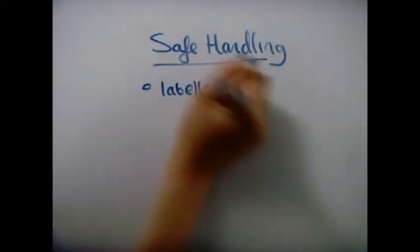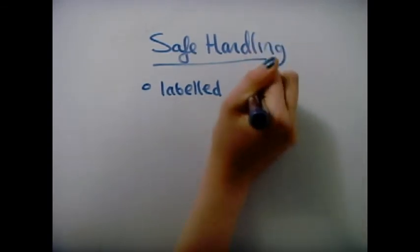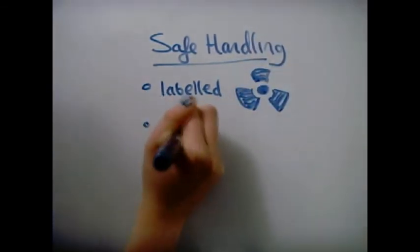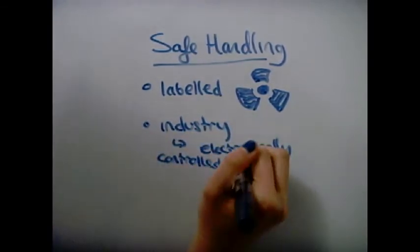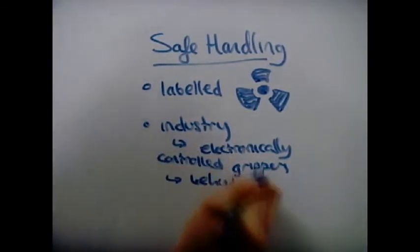Safe handling. All radioactive materials are labeled. In industry, electronically controlled grippers handle these materials through thick lead glass and are monitored with CCTV.